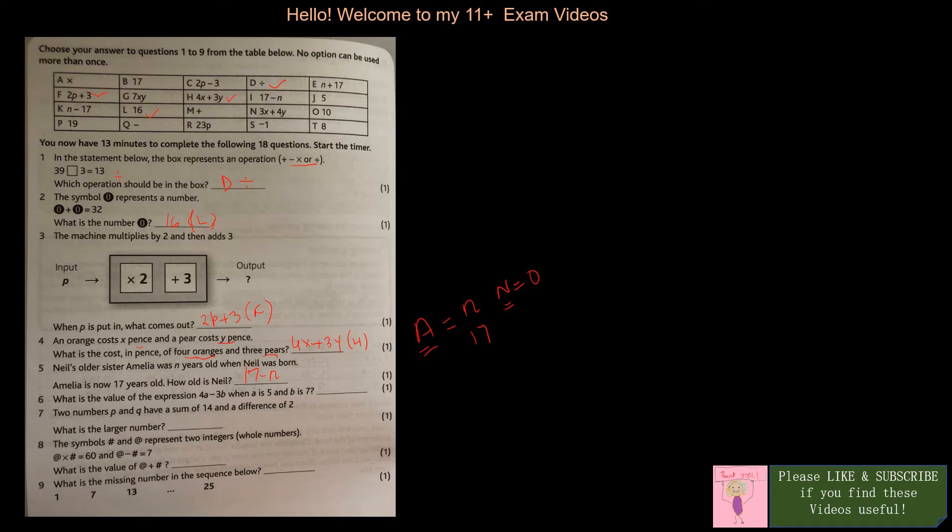Amelia is 17 years old, so Neil would be 17 minus 9. 17 minus 9 is here, I. That's your answer. What is the value of the expression 4a minus 3b when a is 5 and b is 7? So a is 5, 4 times 5 is 20 minus, b is 7, so 3 times 7 is 21. So my answer is 20 minus 21, which is minus 1. It is S.